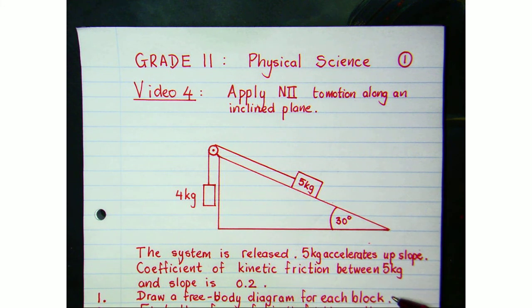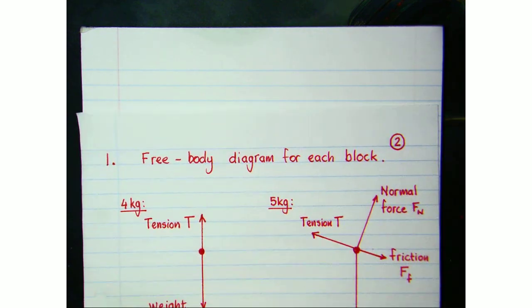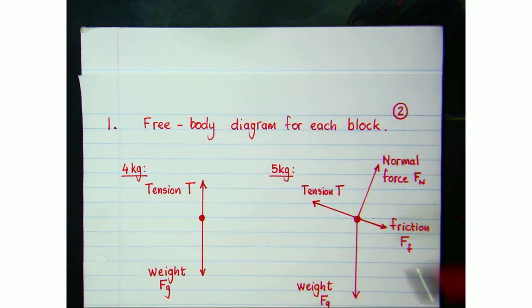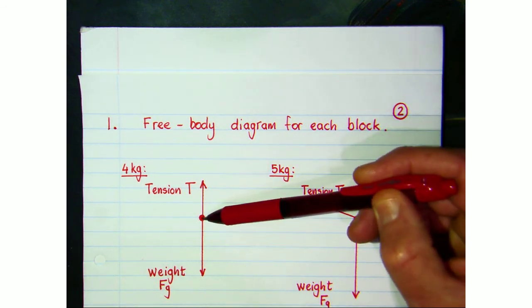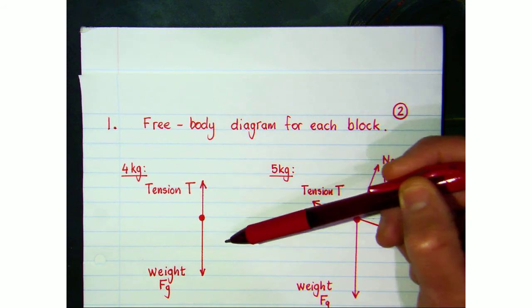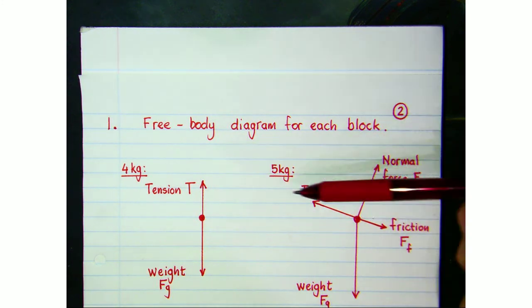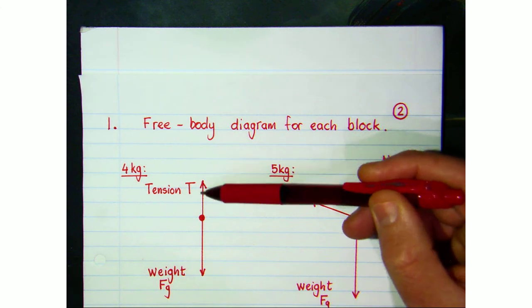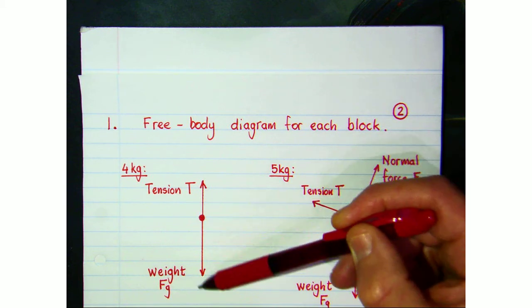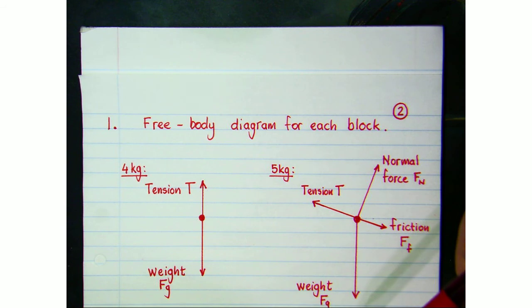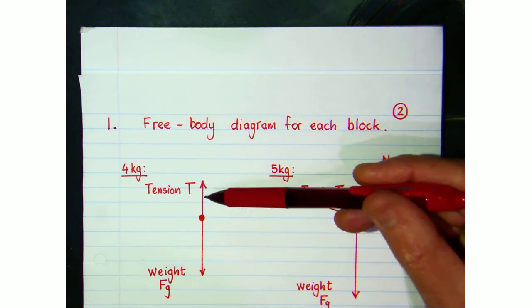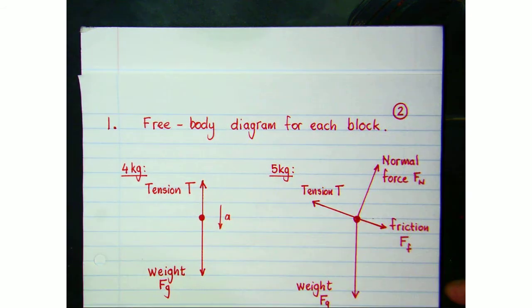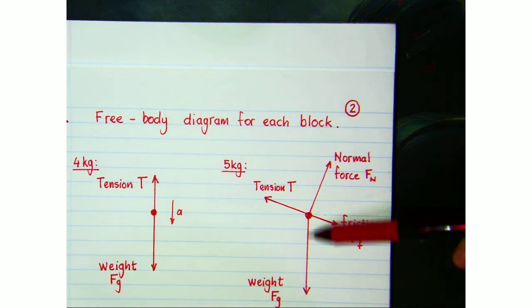To answer question 1 we need to draw a free body diagram for each block. For the 4 kg block, the forces are in the vertical plane: the weight acts downward and tension T acts upward. Because the system is accelerating — the 5 kg goes up the slope and the 4 kg falls — the weight force must be drawn bigger than the tension force; they are not balanced.